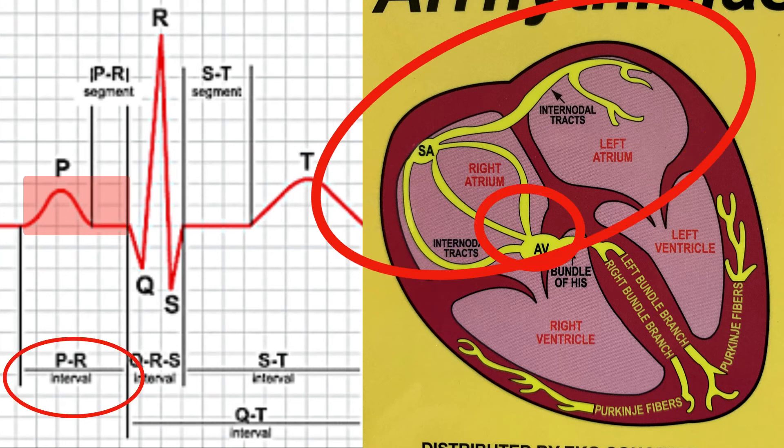The next thing we measure is the PR interval, measured from the start of the P-wave to the start of the QRS. Normal PR interval is 0.12 to 0.20 seconds — between three and five little boxes in width. This represents not only atrial depolarization but also the pause at the AV node, which filters impulses and allows time for the atria to empty their contents into the ventricles before the impulse is transmitted down through the ventricles.